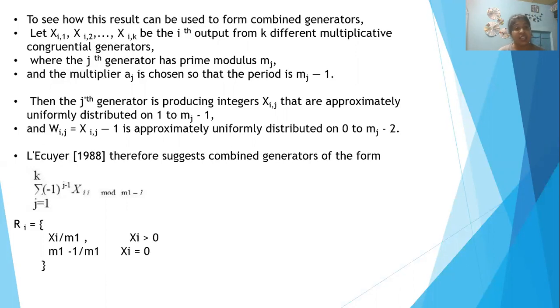The j-th generator is producing integers X_i,j that are approximately uniformly distributed on 1 to m_j minus 1.